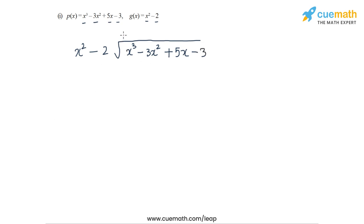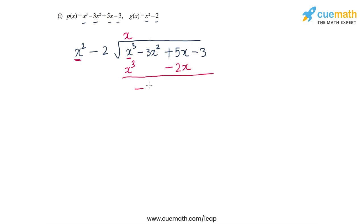The first multiplier will be x, because we need to take x² to x³. With the multiplier x we get the terms x³ - 2x. We write that and then subtract, which gives us -3x² + 7x - 3.